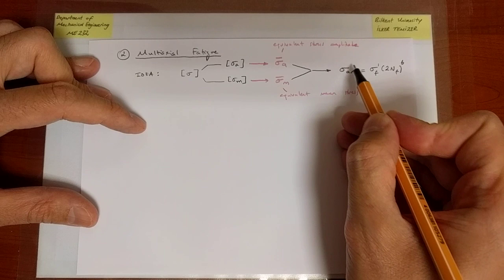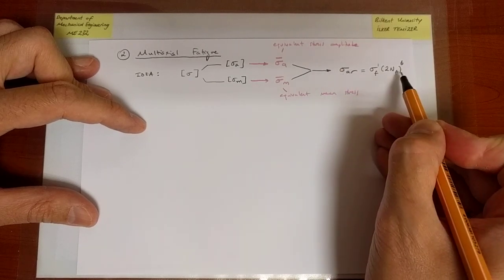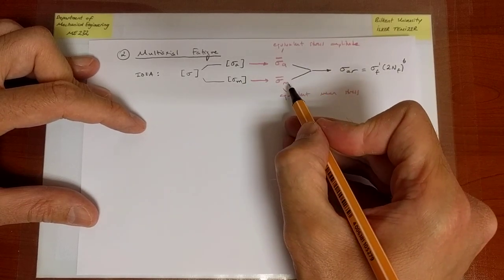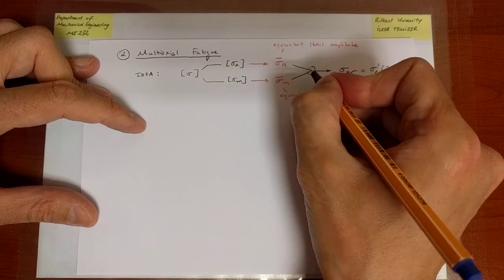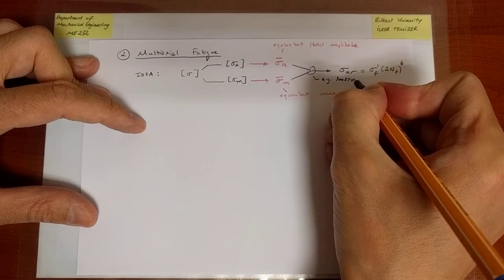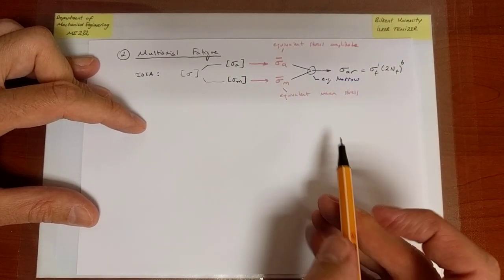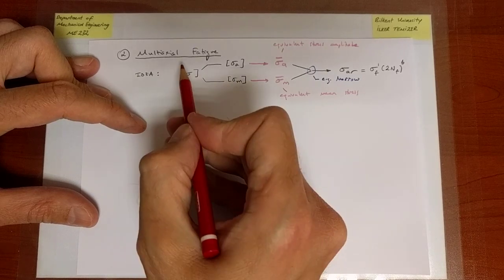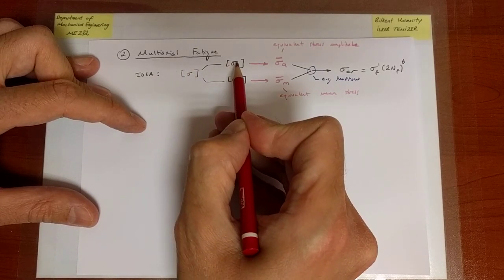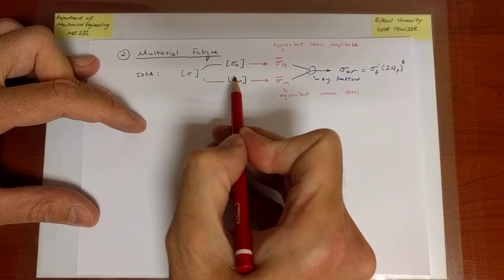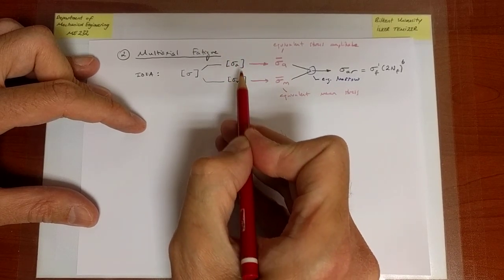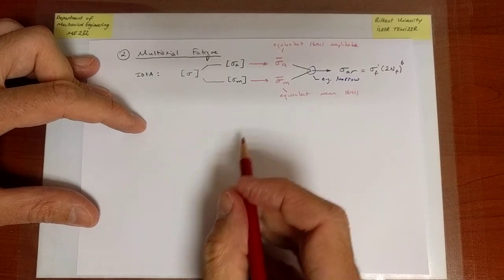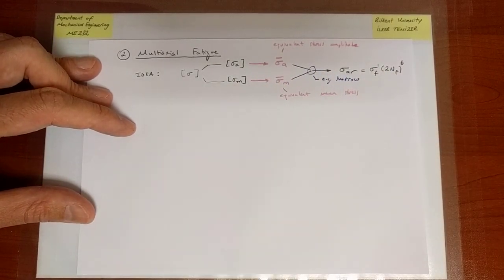The idea is always to fall back to the Basquin equation. The Basquin equation says that if you have a completely reversed stress amplitude, this is how you predict life — one-dimensional with a single normal stress. If you have a mean stress, you use a map based, for instance, on the Morrow relation or the SWT relation. What we are presently saying is: if all components of the stress have their own alternating and mean values, you separate those into individual matrices, map each matrix into a single equivalent normal stress amplitude and mean stress, and then follow the same path towards life.